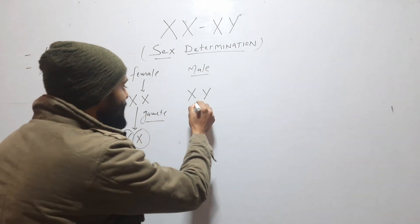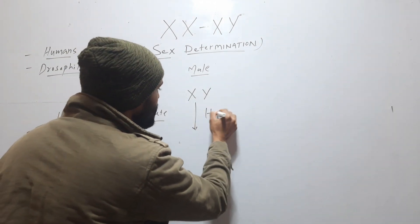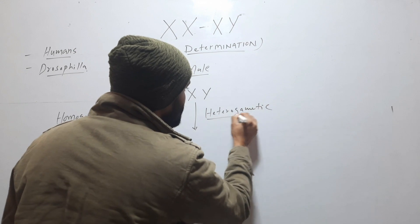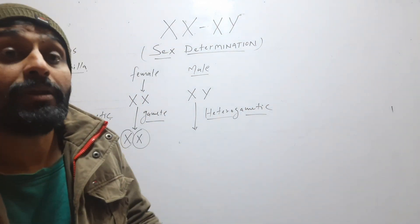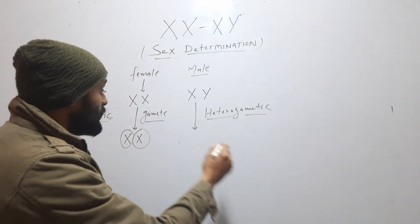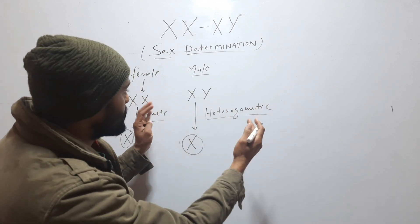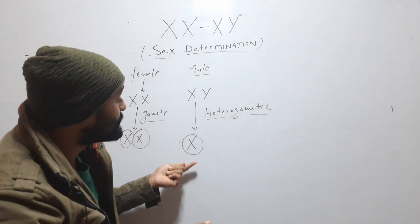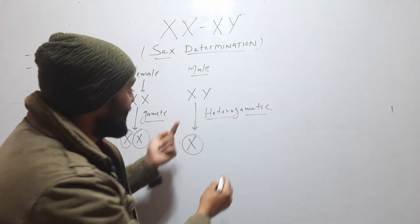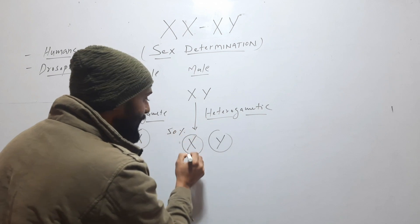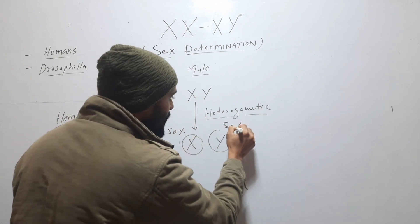But this male will be called heterogametic. This means its gametes will be different because when these chromosomes separate during gamete formation, half of the gametes will contain X chromosome and the other half will have Y. So 50% will have X and 50% will have Y.